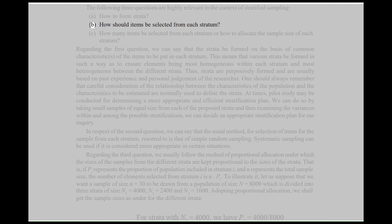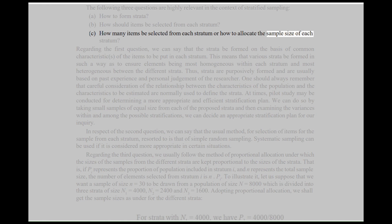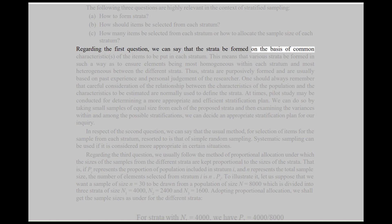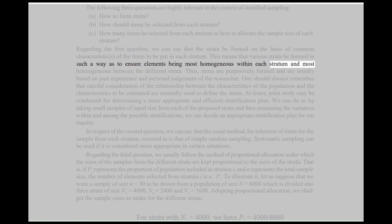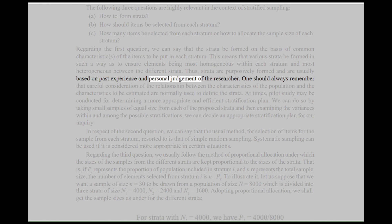The following three questions are highly relevant in the context of stratified sampling: A. How to form strata? B. How should items be selected from each stratum? C. How many items be selected from each stratum, or how to allocate the sample size of each stratum? Regarding the first question, strata should be formed on the basis of common characteristics of the items, ensuring elements are most homogeneous within each stratum and most heterogeneous between different strata. Thus, strata are purposively formed and are usually based on past experience and personal judgment of the researcher.